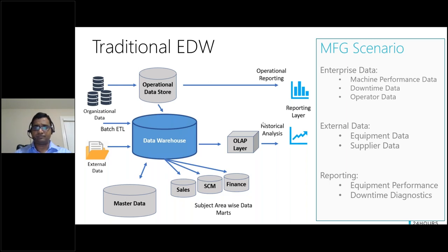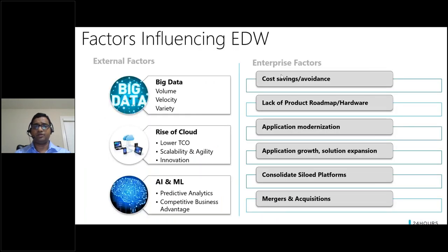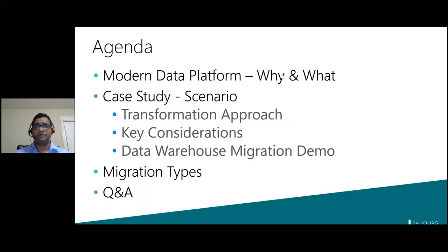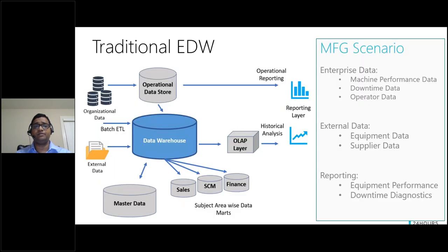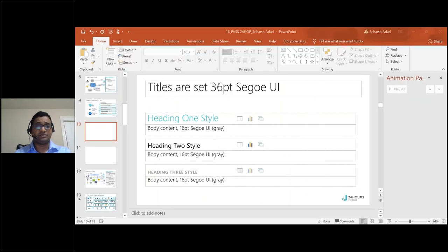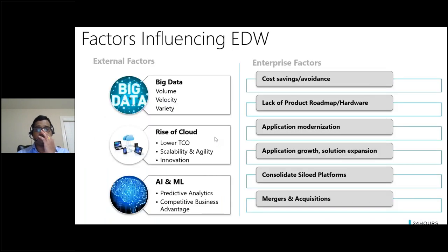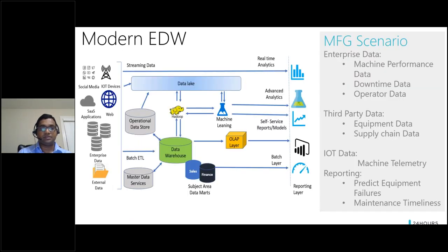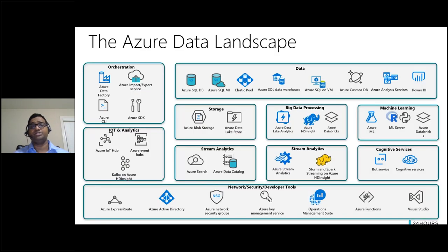We're good now. I apologize if you missed the earlier slides. The agenda showed today's topics, followed by the traditional EDW architecture showing ETL, then the manufacturing scenario where you could view past performance information, then the factors influencing the EDW — external factors around big data, rise of cloud, AI and ML — and then internal factors. And the modern data warehouse architecture. I am right now at the Azure data landscape.